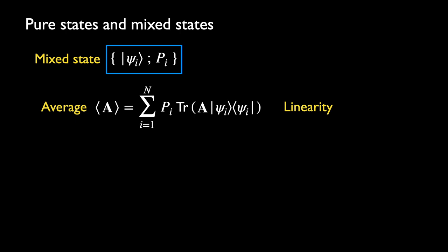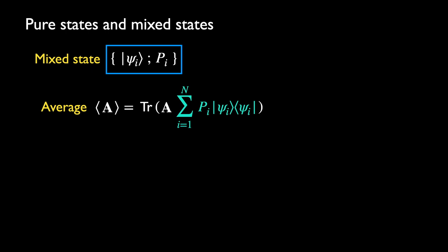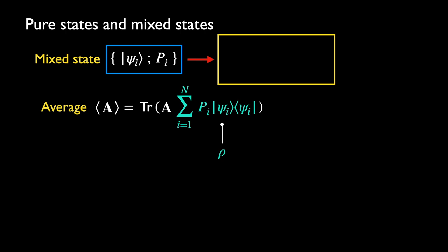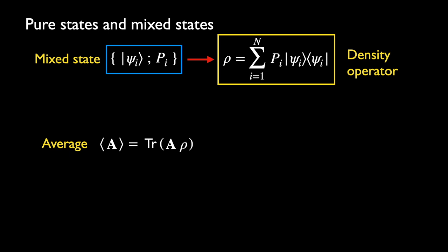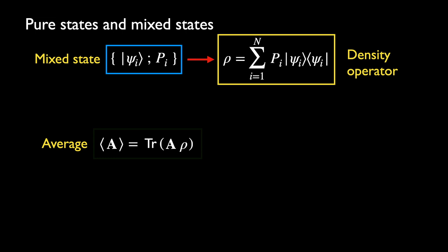Using the linearity of the trace, we can bring in the entire sum. We define this weighted sum over all the projectors of states in the ensemble as the operator rho — what is known as a density operator. This operator allows us to calculate the average value of any observable of the system which is in a mixed state. Since rho carries all the statistical information of a mixed state, from here on we shall regard them as identical.